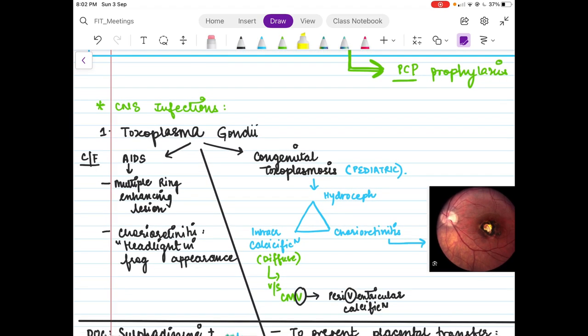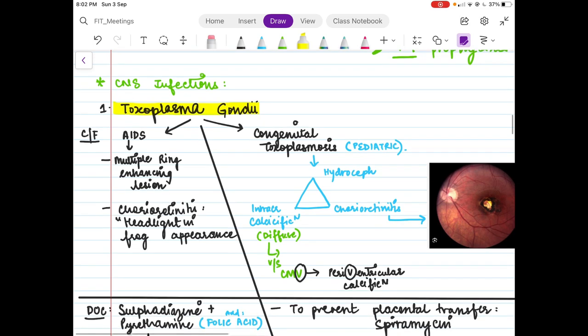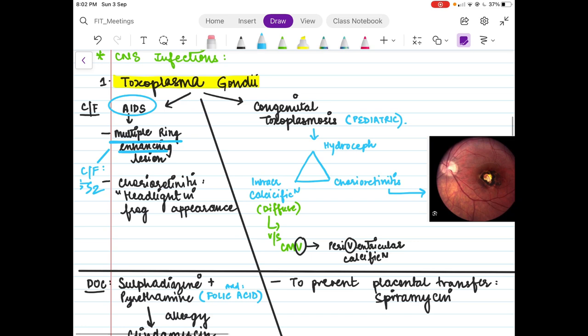Coming to CNS infections, the first very important one is Toxoplasma gondii. Again you can have two clinical spectrums with this organism. First is a clinical stem with a patient of AIDS presenting with multiple ring-enhancing lesions. The clinical feature of which will be seizures. Then it can also present with chorioretinitis, and this is an ophthalmology question: what is the appearance known as? Headlight in fog appearance.